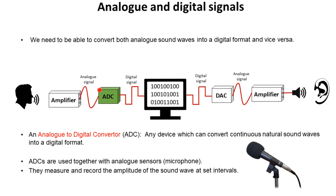An analogue to digital converter, an ADC, as the name suggests, is any device which converts continuous natural waves into a digital format. ADCs are used in conjunction with analogue sensors, the most obvious being a microphone. They measure and record the amplitude of the sound wave at set intervals and turn it into a digital signal.